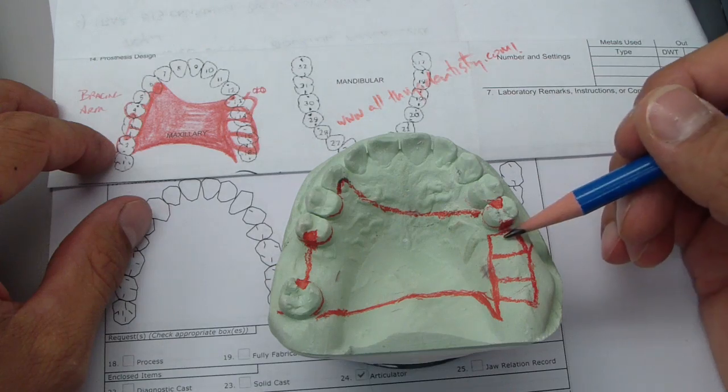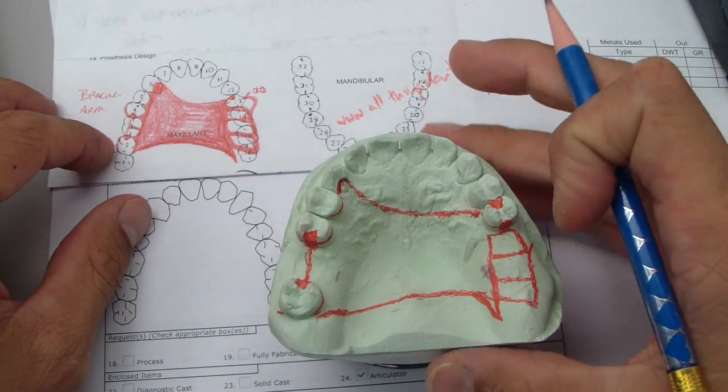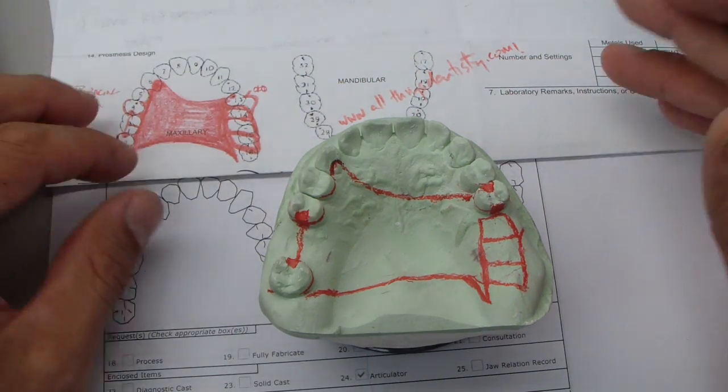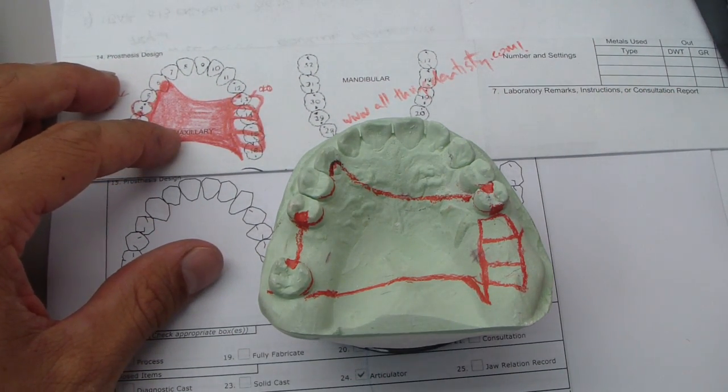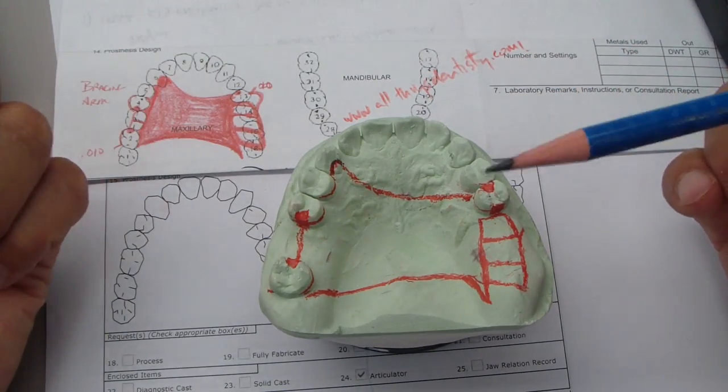This patient here has an edentulous ridge here and also we're missing a tooth here. Now when you're designing, I left dental school and I forgot how to design an RPD and I would just use what existed. Well in this case nothing exists, so this was a really good learning experience for me.